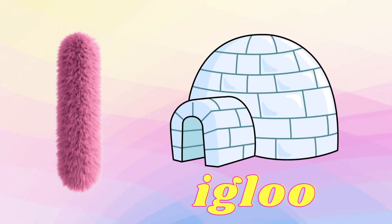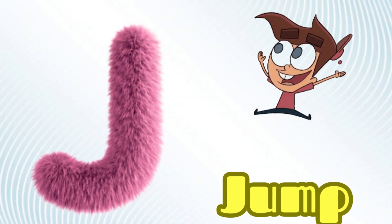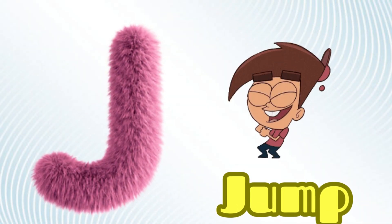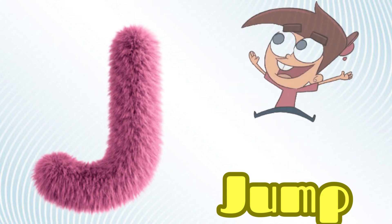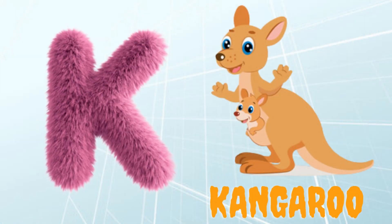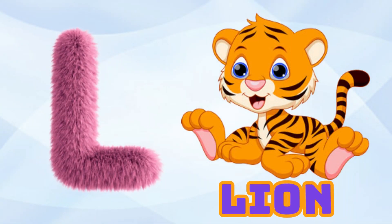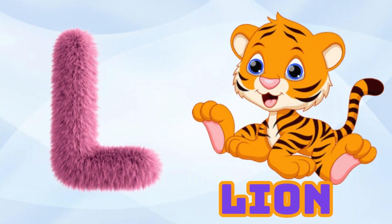I is for Igloo, I-I-Igloo. J is for Jump, J-J-Jump. K is for Kangaroo, K-K-Kangaroo. L is for Lion, L-L-Lion.